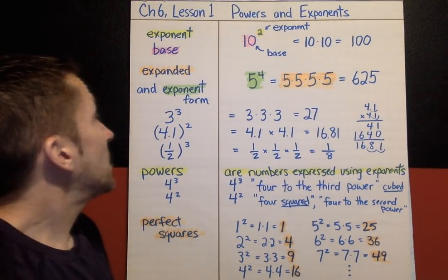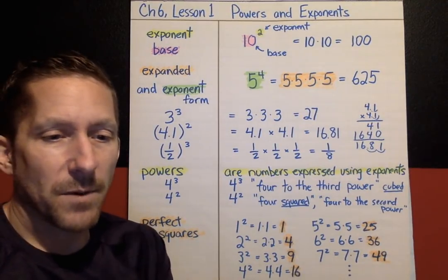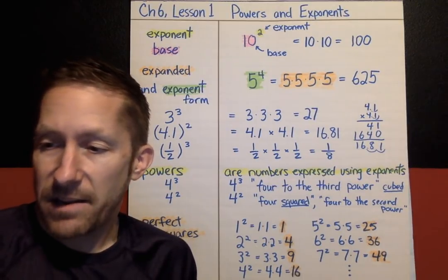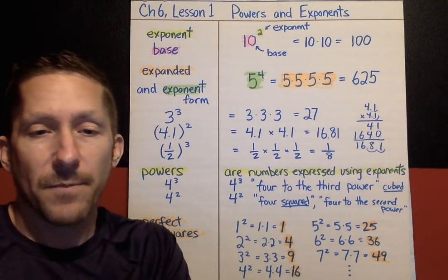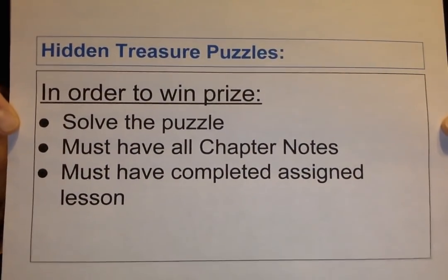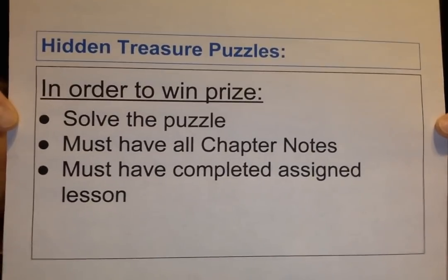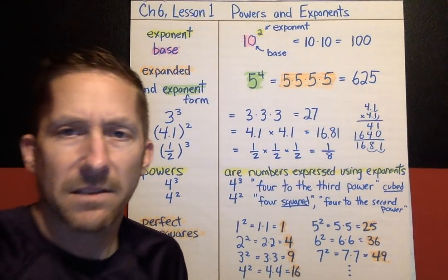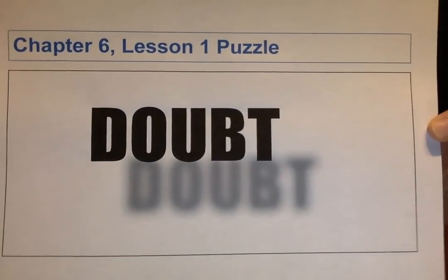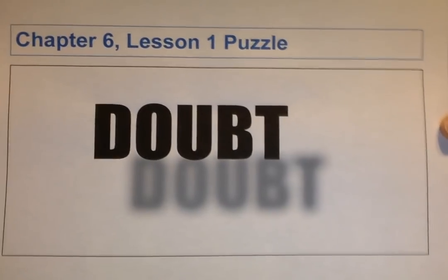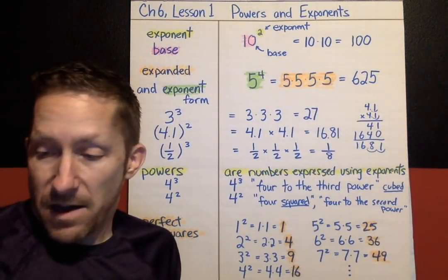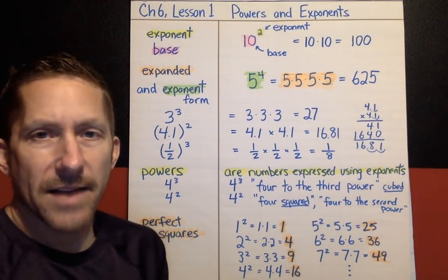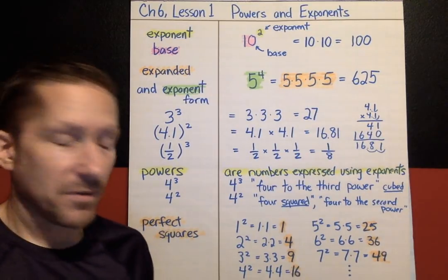That pretty much does it for Chapter 6, Lesson 1. Have fun working with exponents and all the various forms today. Here is the Hidden Treasure Puzzle, starting a new chapter of puzzles. In order to win Hidden Treasure, you have to solve the puzzle, you must have all your chapter notes, and you must have completed the assignment. Solve that puzzle — what common phrase or words can you come up with? I'll draw for a winner the day after your assignment for this lesson. Good luck — I'll see you soon for Lesson 2.